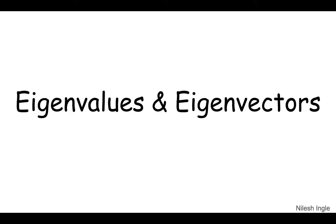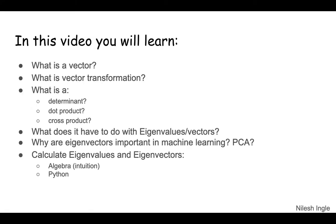Hello and welcome. It's great to have you back on the channel. Today we are going to talk about eigenvalues and eigenvectors. In this video you'll learn what is a vector, what is vector transformation, what are determinants, dot products and cross products, what does it all have to do with eigenvalues and eigenvectors, and why eigenvectors are so important in machine learning. We'll use PCA, which is principal component analysis, as an example, and I'll talk about a little bit of algebra to give you an intuition about how eigenvalues and eigenvectors are calculated.